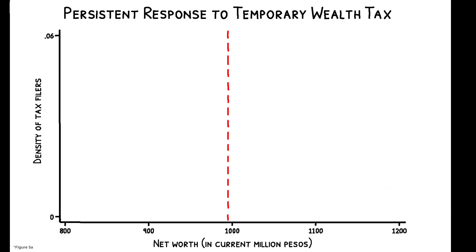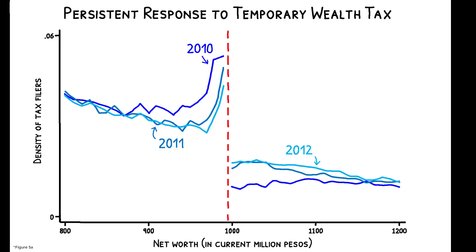Yet, we see bunching below this threshold in 2010, 2011, and 2012, even though this behavior has no impact on tax liability after 2010.